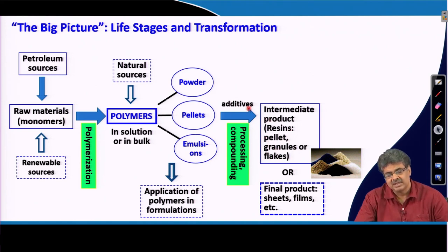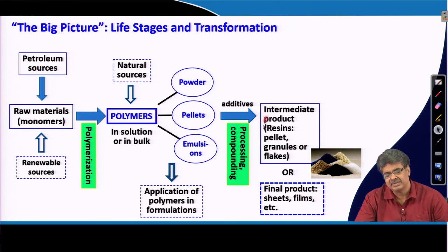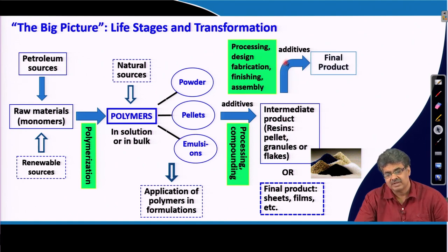Sometimes in this step itself we can produce final products with very simple shapes like sheets, films, pipes, etc. Once we are ready with this intermediate product, these are taken for further processing. In this second step, we can add additives and do processing called designing, fabrication, and finishing to get the final product.